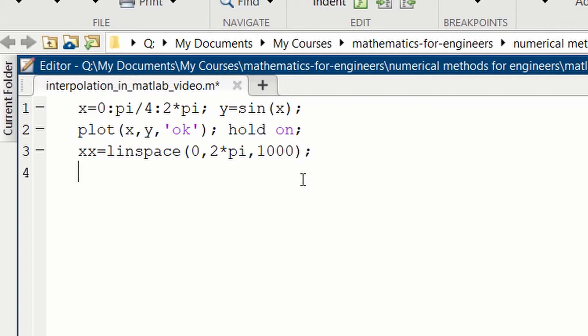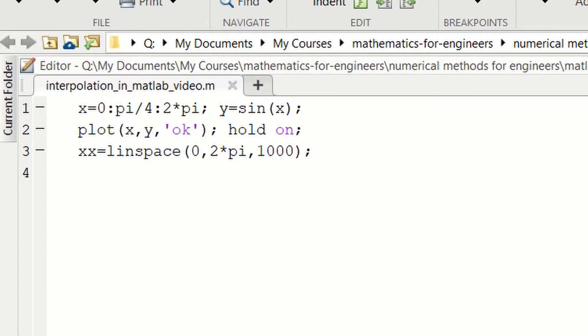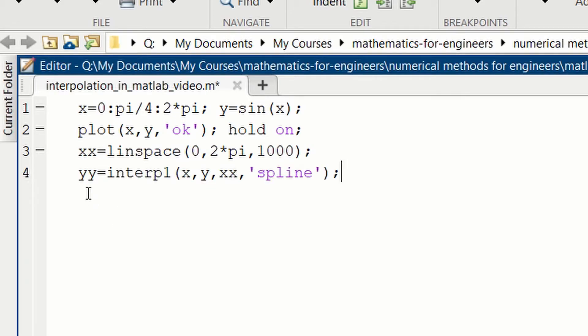And then, we can interpolate to y. I will use the interp1 function. And set yy equal to interp1 of xy, that's our data, these sparse points and the sine, to interpolate to xx to get the value of yy. And we'll use the cubic spline interpolation.